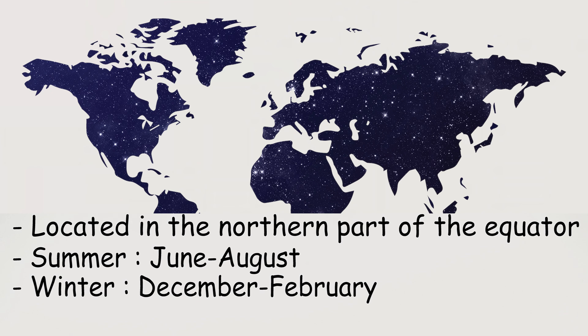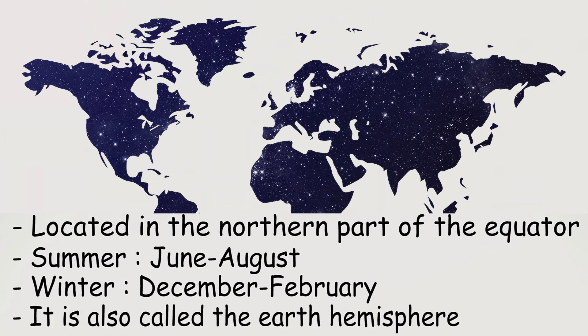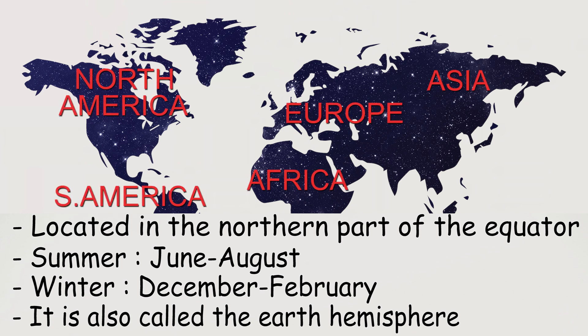Astronomical summer in the north lasts from June to August, while winter lasts from December to February. The northern hemisphere has far more terrestrial surfaces than the southern one and is therefore also called the 'earth hemisphere.'